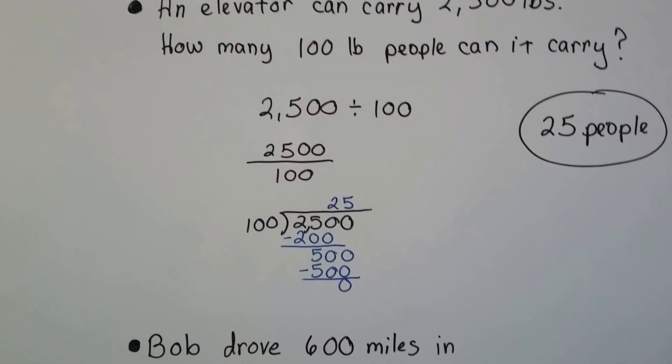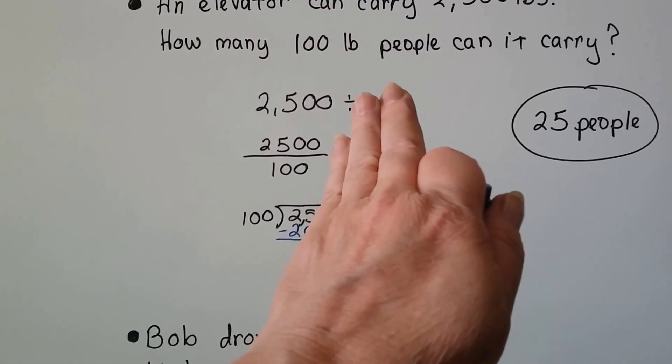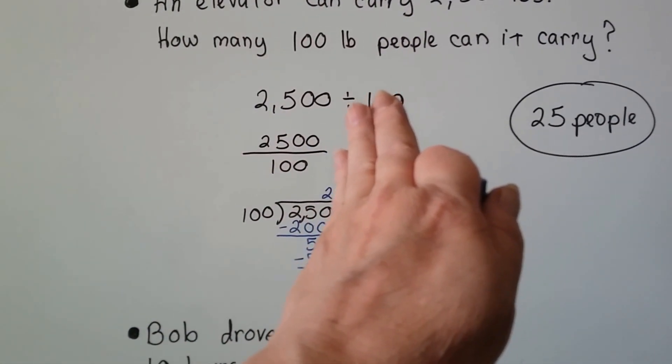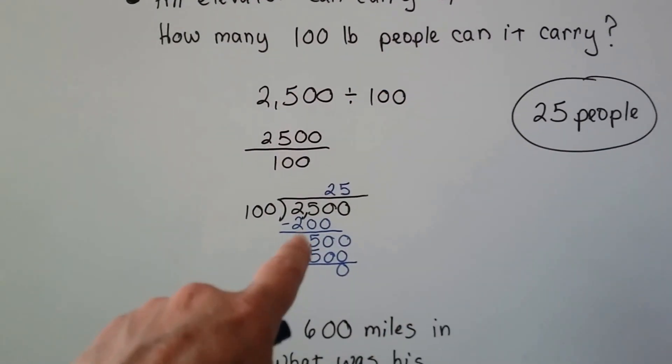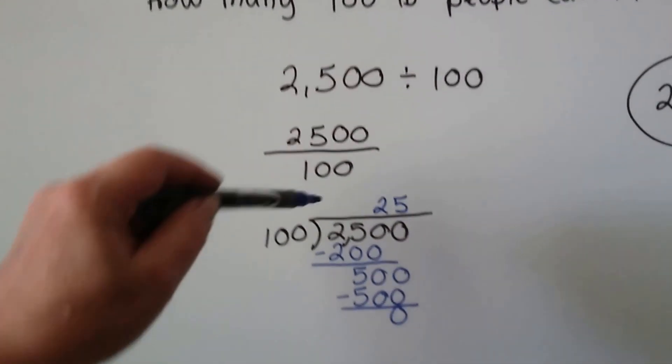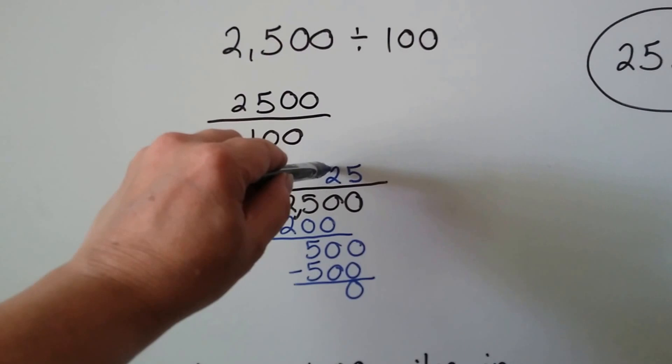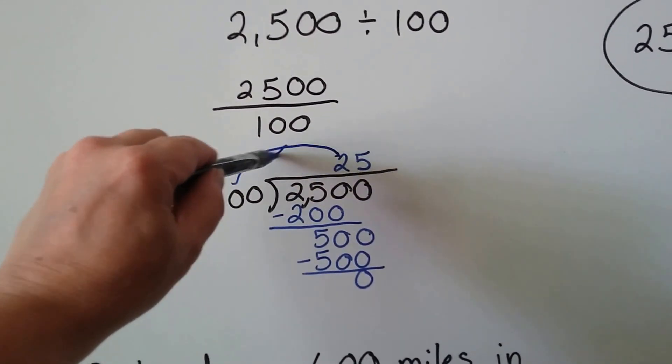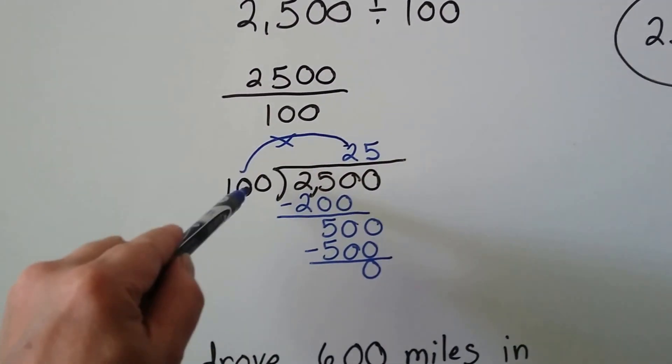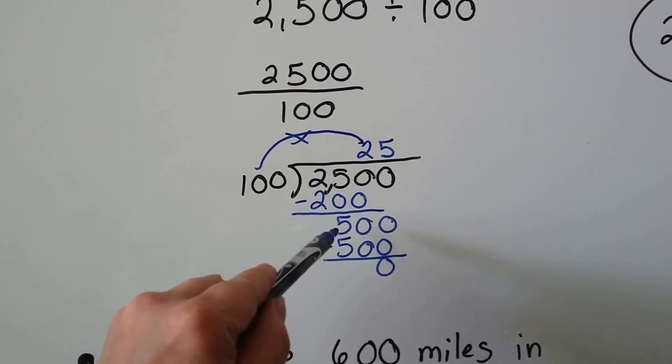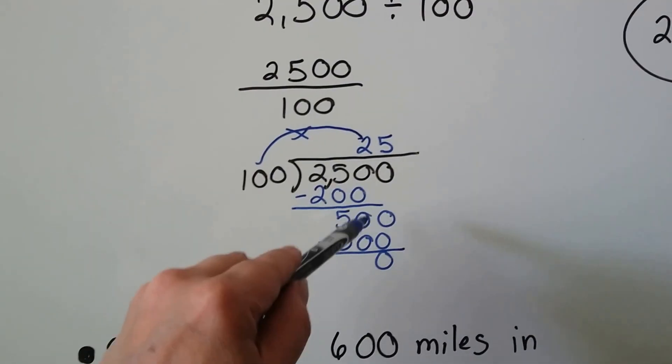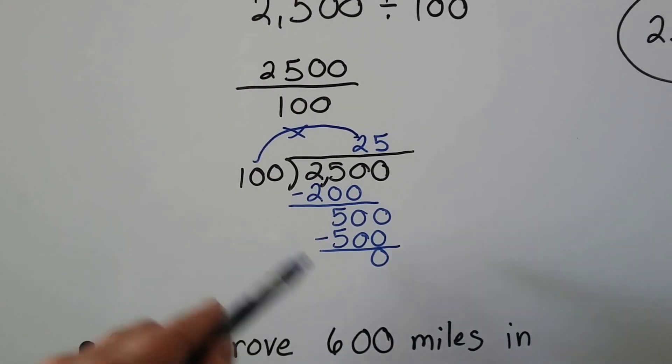100 can't go into 2, and it can't go into 25, but it can fit into 250 two times, can't it? That would be 200. And what we do is when we write the 2 up here, we then multiply the 2 times the 100 and write it there. We do our subtraction and we get a 5 and a 0.